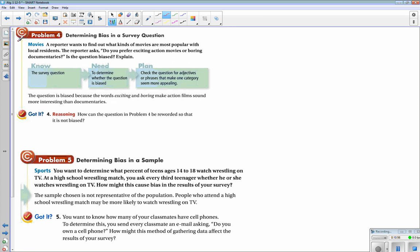All right, so the last two problems, we're going to take a look at bias. So, here's our situation. A reporter wants to find out what kinds of movies are most popular with local residents. The reporter asks, do you prefer exciting action movies or boring documentaries? Is the question biased? Explain. The question is biased because the words exciting and boring make action films sound more interesting than documentaries.